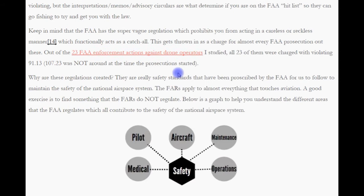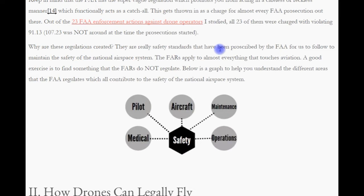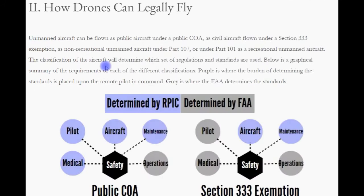So why are these regulations created? They are really just safety standards prescribed by the FAA for us to follow to maintain the safety of the national airspace system. The FARs apply to almost everything that touches aviation. A good exercise is to find something that the FARs do not regulate. Below is a graph to help you understand the different areas that the FAA regulates, which all contribute to the safety of the national airspace system.